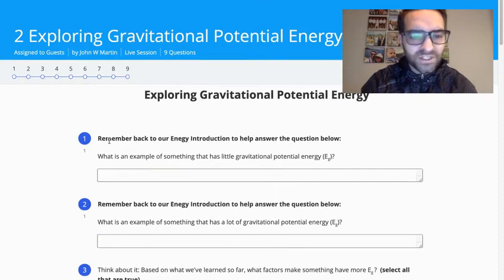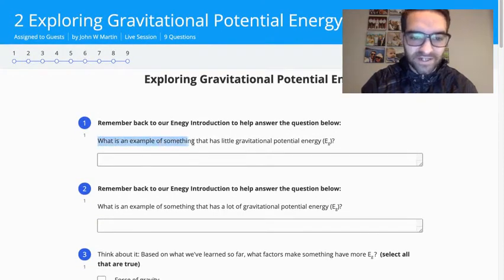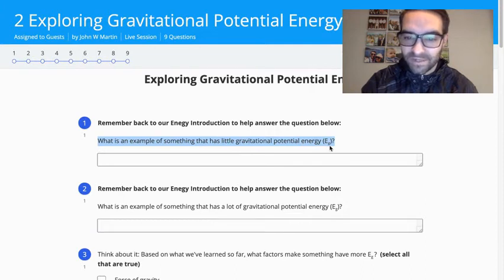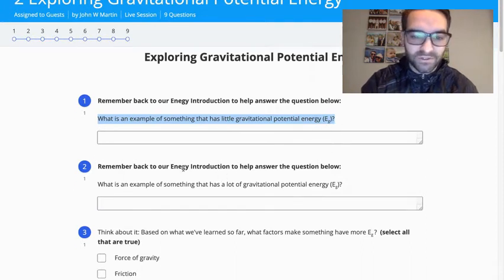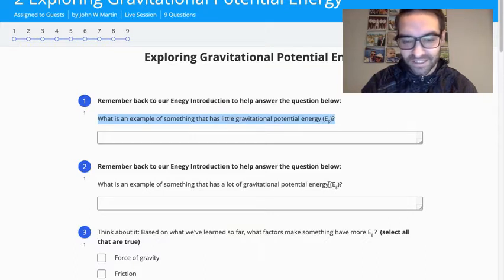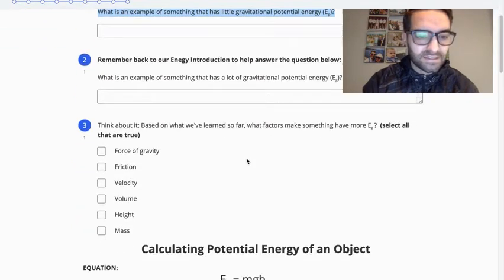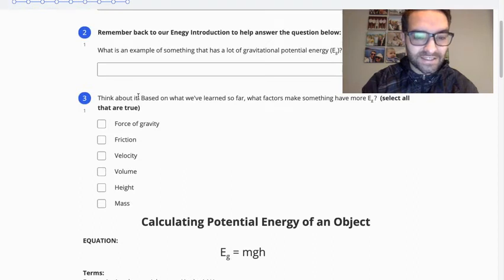So with questions 1 and 2, I want you just to think of an example of something that has a little potential energy, gravitational potential energy. And that's represented by E_G. And then I want you—just found a typo on both of those. What is an example of something that has a lot of gravitational potential energy? And so endless possibilities, really, you just want to make sure you touch on what we already know.